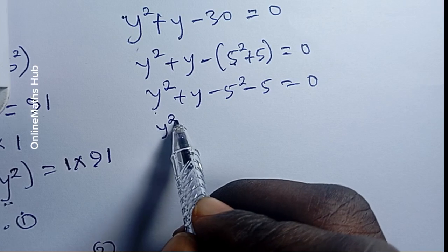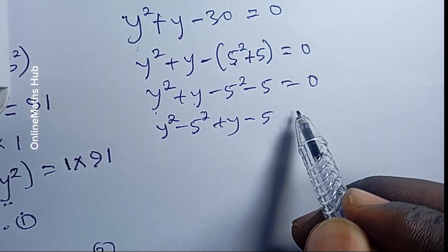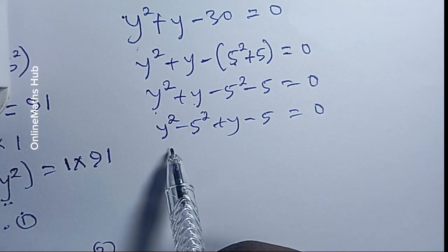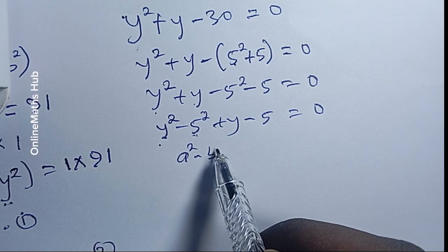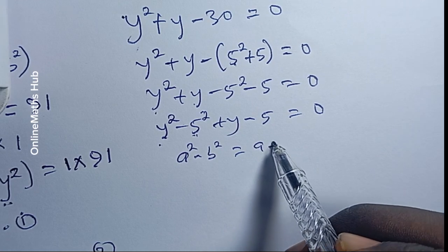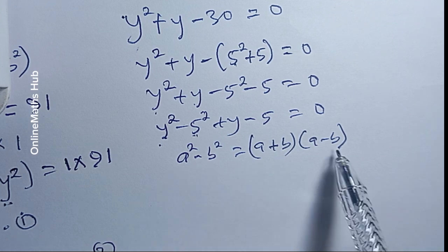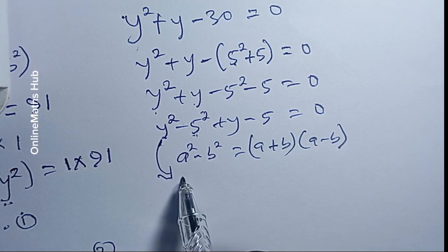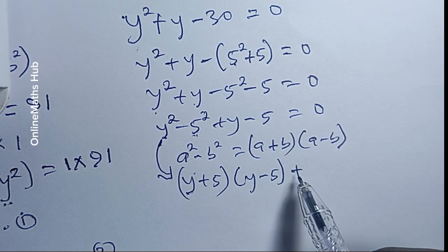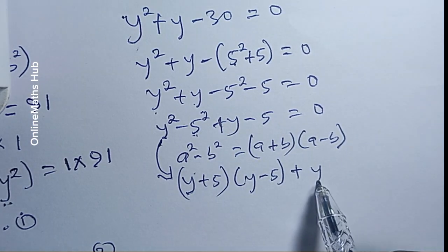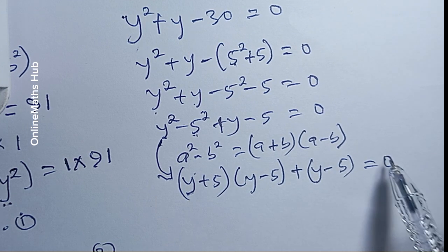Rearranging, we have y² minus 5² plus y minus 5 equals 0. This uses the difference of two squares identity: a² minus b² equals (a plus b)(a minus b). So y² minus 5² becomes (y plus 5)(y minus 5), and we have (y plus 5)(y minus 5) plus (y minus 5) equals 0.